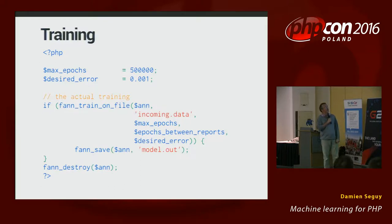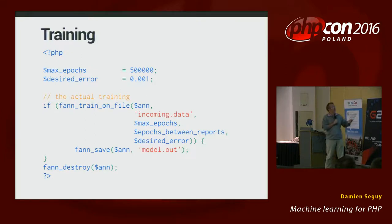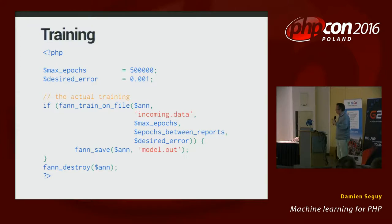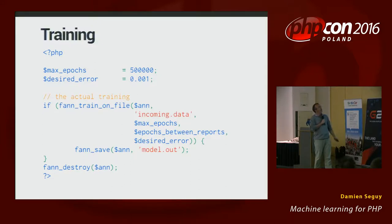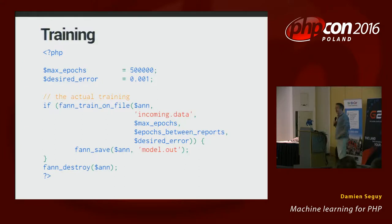The second part of code is the training: we use the resource and call train_on_file. Very easy — incoming data is the file name of the data we prepared previously. We have the number of epochs and the error. Number of epochs is the number of times FANN is going to test the data until it finds a satisfactory set of parameters. It's going to try something, see if it's good or not, draw back, change it a little bit, try again — and it's going to do that by default half a million times. The desired error we use here is 0.01 — very little.